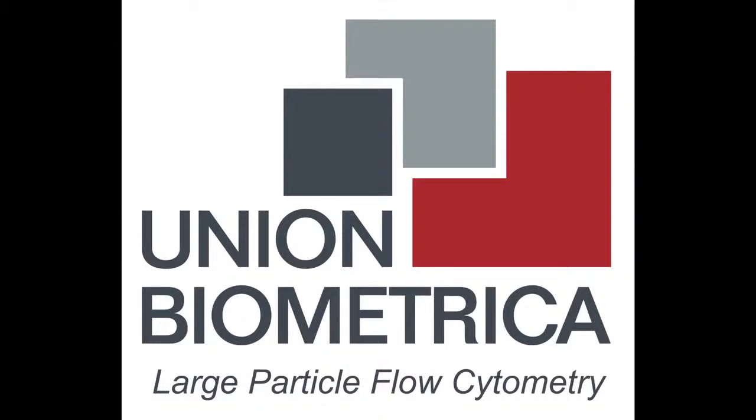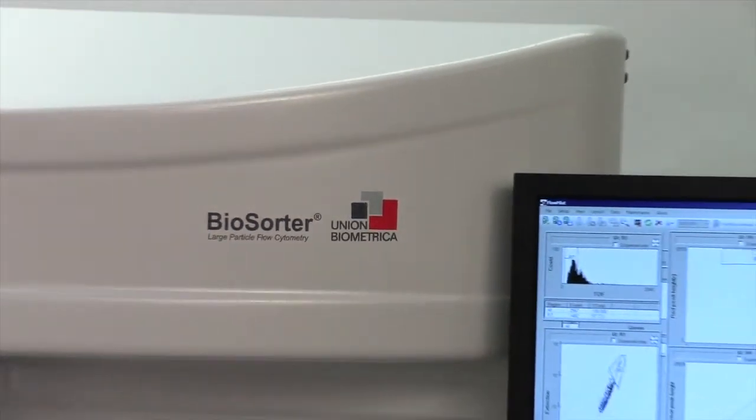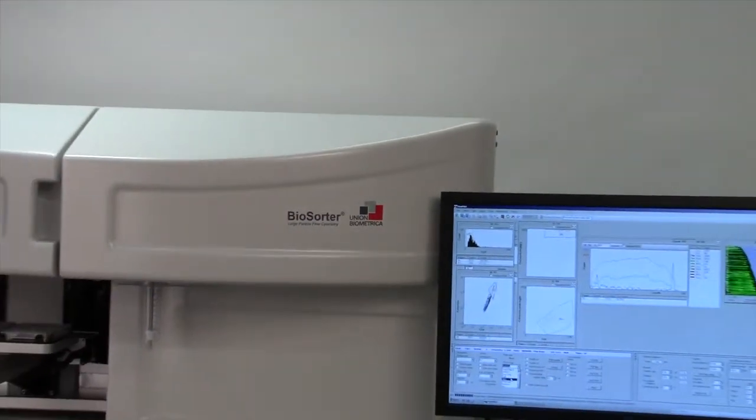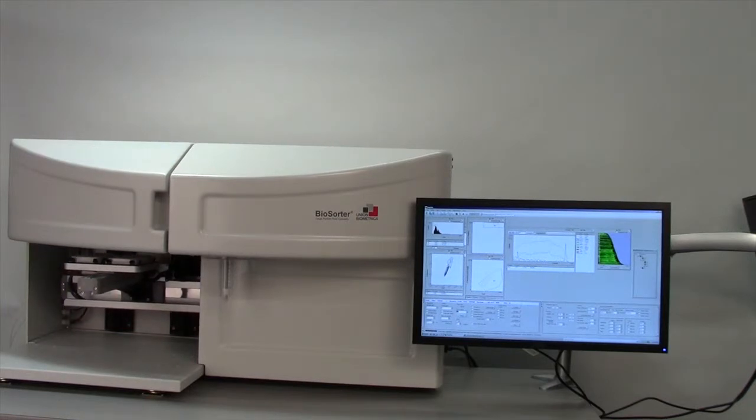Union Biometrica flow cytometers are designed for the analysis and sorting of objects that are too large or too fragile for traditional cytometry. These instruments offer an alternative to tedious manual sorting with a microscope.